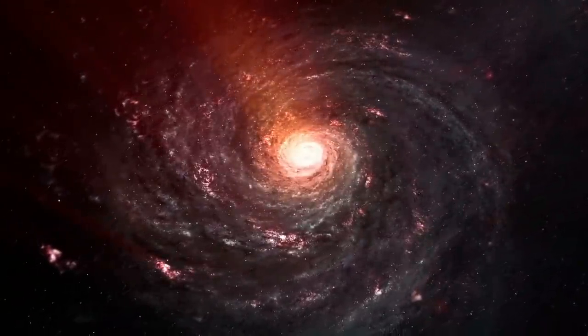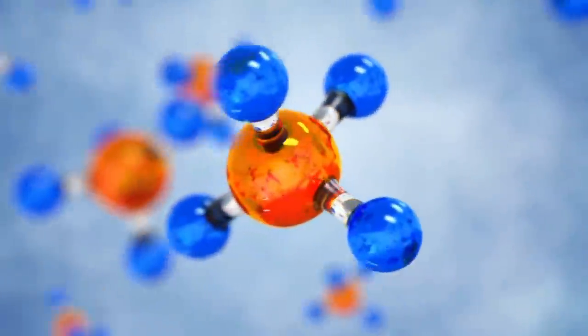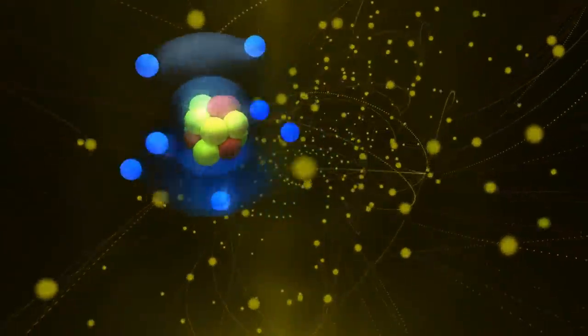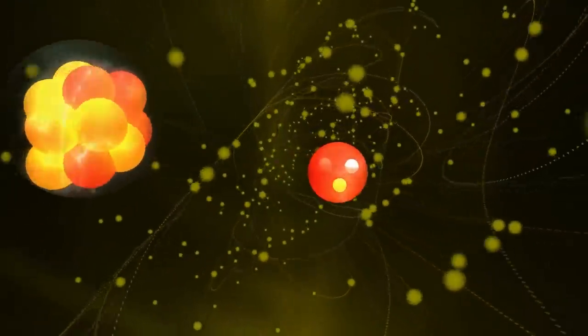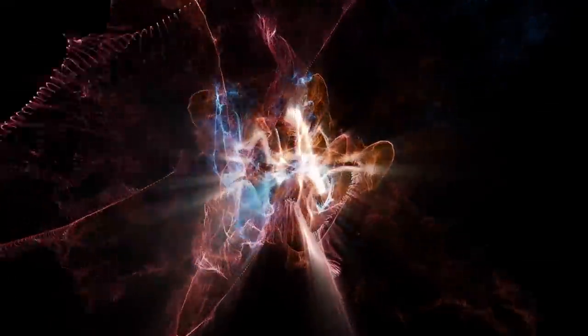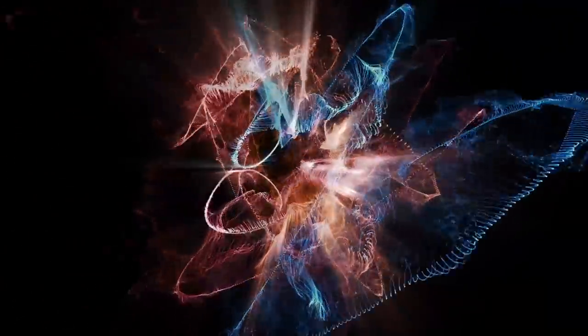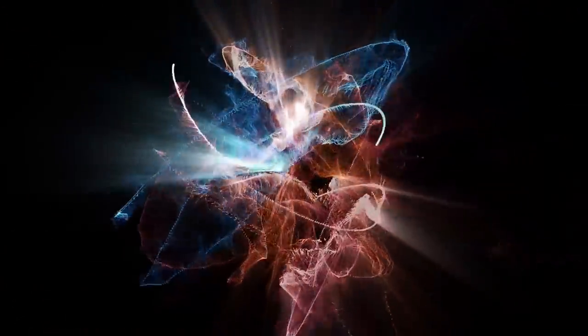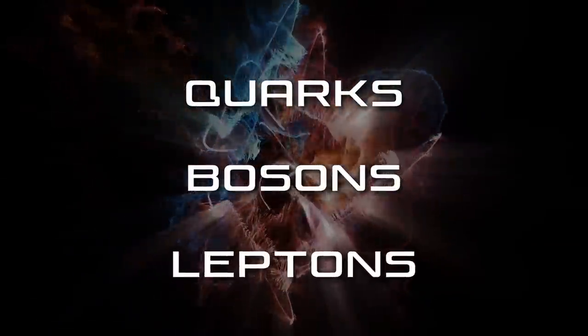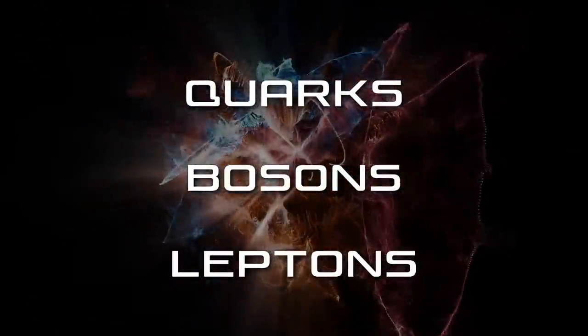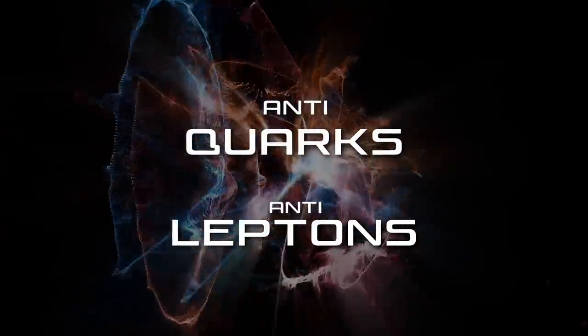Everything that we know in the universe is made up of atoms and more specifically particles like protons, neutrons, and electrons. Normal matter consists of these particles, which can be categorized in one of three fundamental ways: quarks, bosons, and leptons, as well as their antimatter counterparts, anti-quarks and anti-leptons.